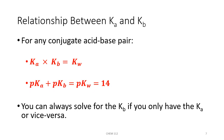The acid ionization constant and the base ionization constant are related to one another through the Kw for water for any conjugate acid-base pair. So if we're given Ka but need Kb, we can solve for the unknown Kb by rearranging that equation using the Kw of water. We can also say that pKa + pKb = pKw = 14. We can rearrange to find a missing Kb or a missing Ka, depending on which is given.